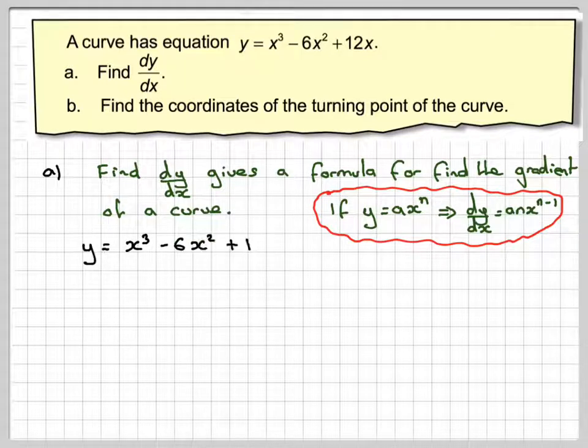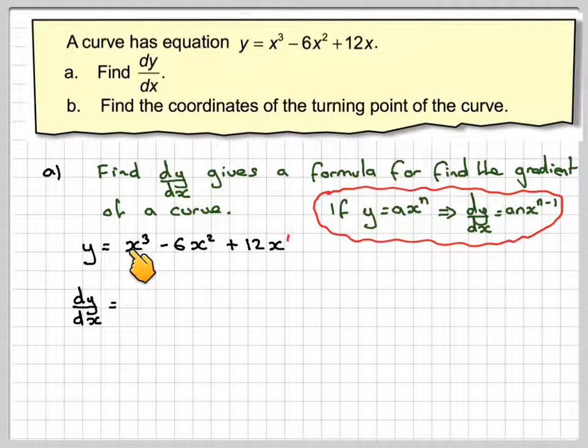So we've got y is equal to x cubed minus 6x squared plus 12x. Good idea here to add in an extra 1 for you. So applying this rule to each of these terms individually. So we get dy by dx is going to be 3. Write down x and reduce the power by 1.